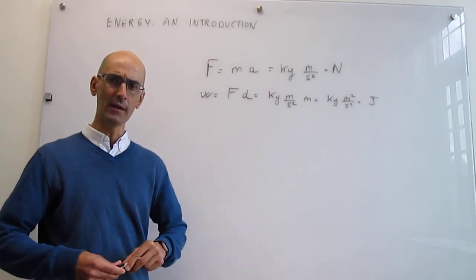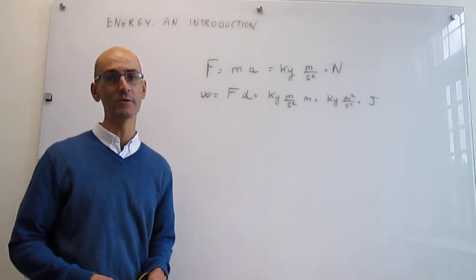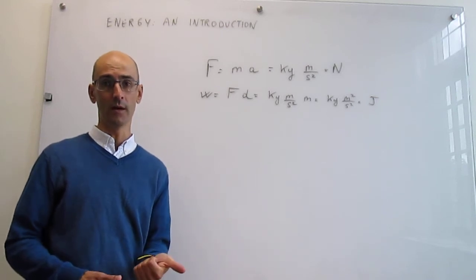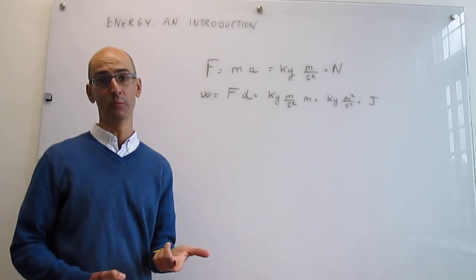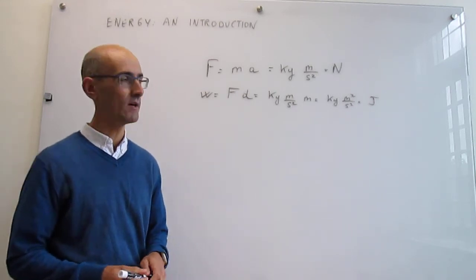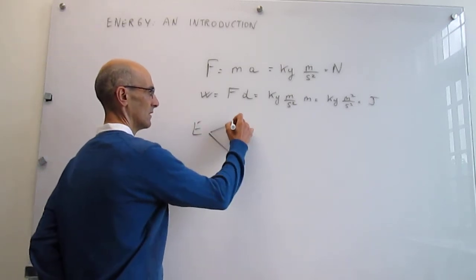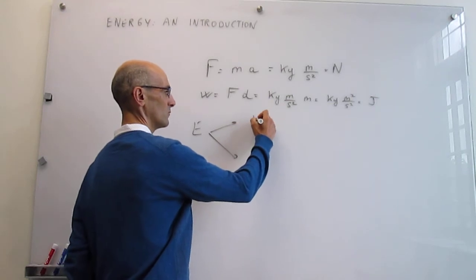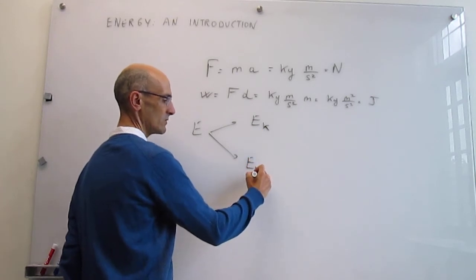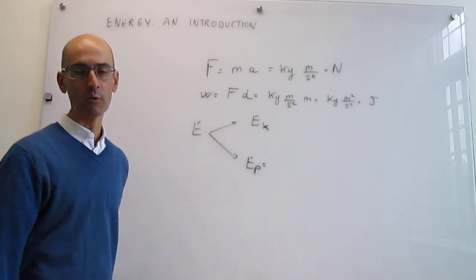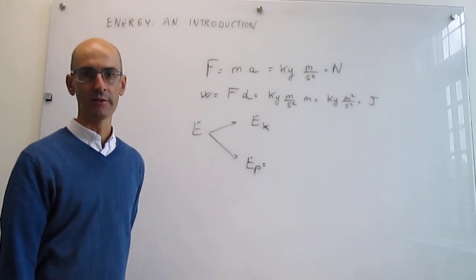Generally, we consider two types of energy: one due to velocity or motion, and another due to position. The energy due to motion is called kinetic energy (Eₖ), and the energy due to position is called potential energy (Eₚ). Let's discuss typical expressions for kinetic and potential energy.